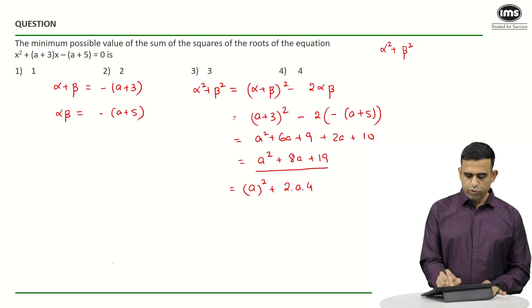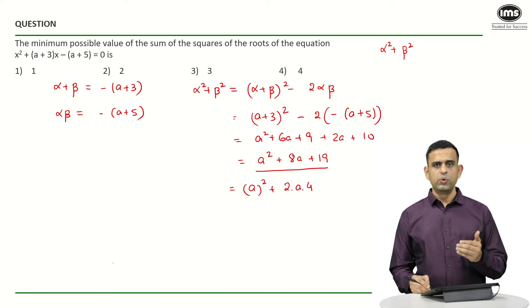So twice of a times 4. So as of now, you have a² + 2·a·4.